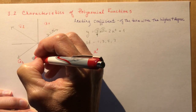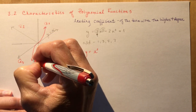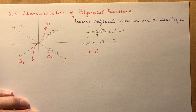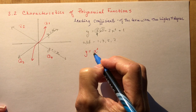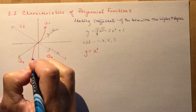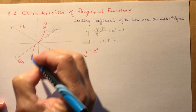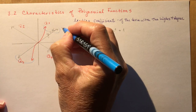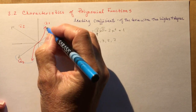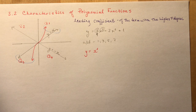What does y = x³ look like? Well, it goes like this. What you need to note is that with the same positive leading coefficients, they will start in Q3 and end in Q1. So we're reading from left to right. If this line is going this way, then my cubic function will also start in Q3 and end in Q1.